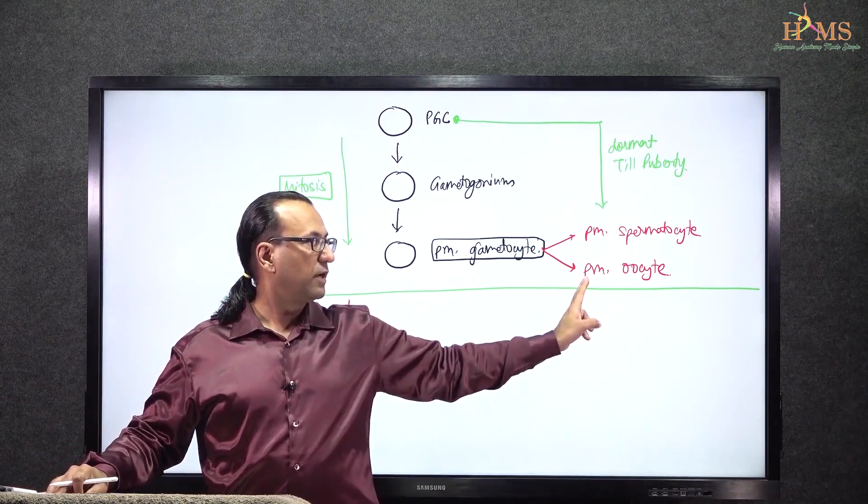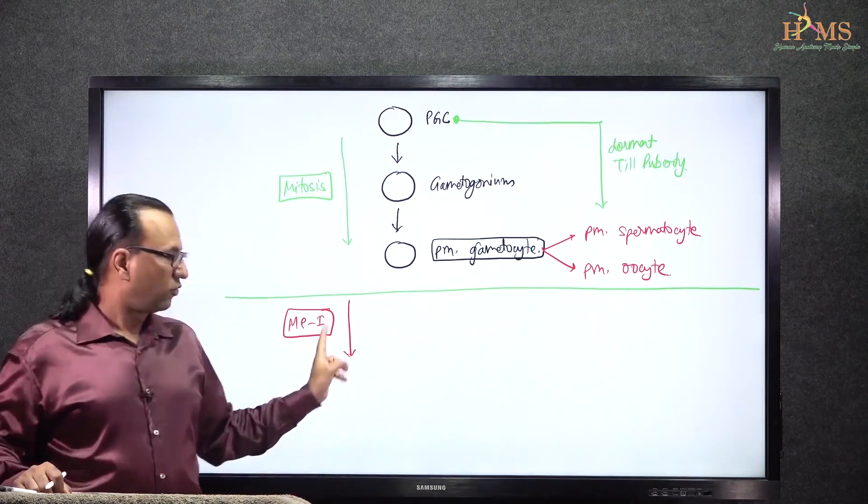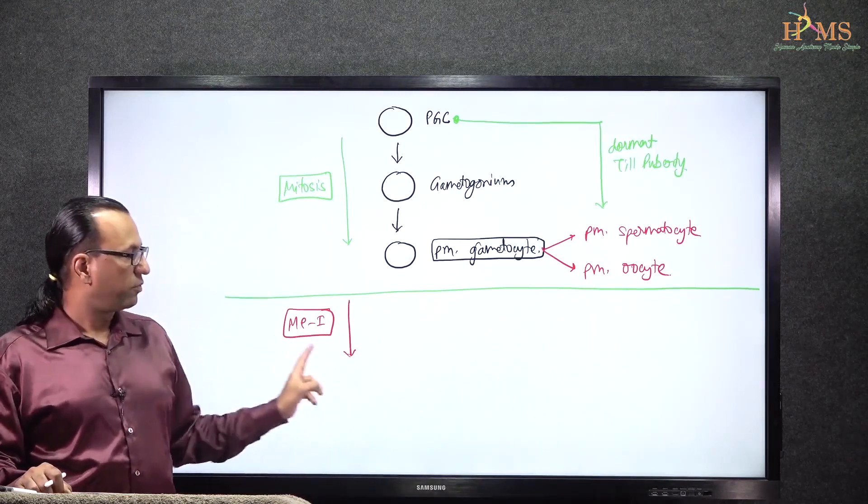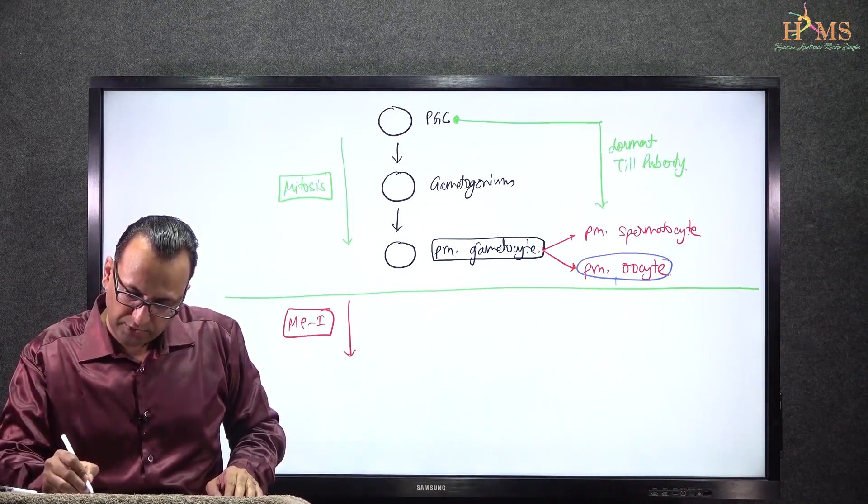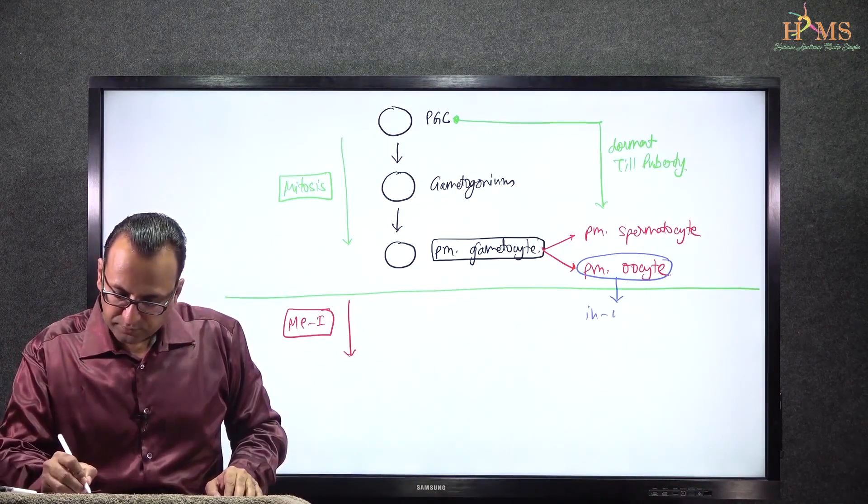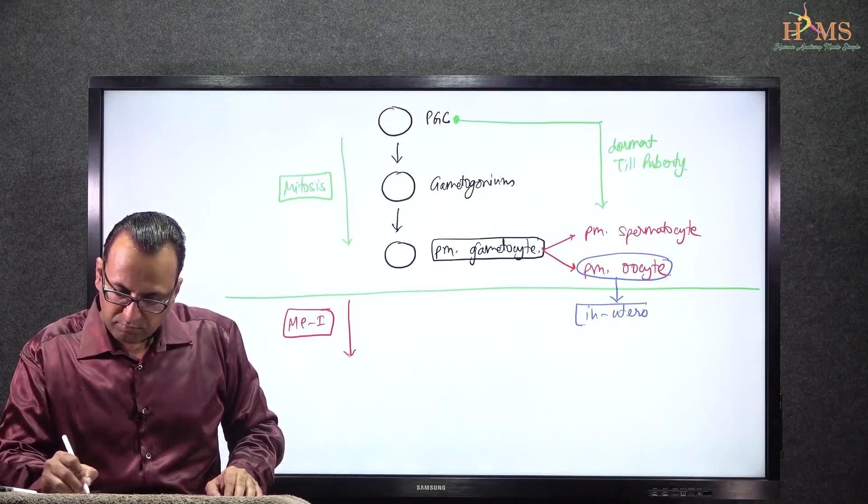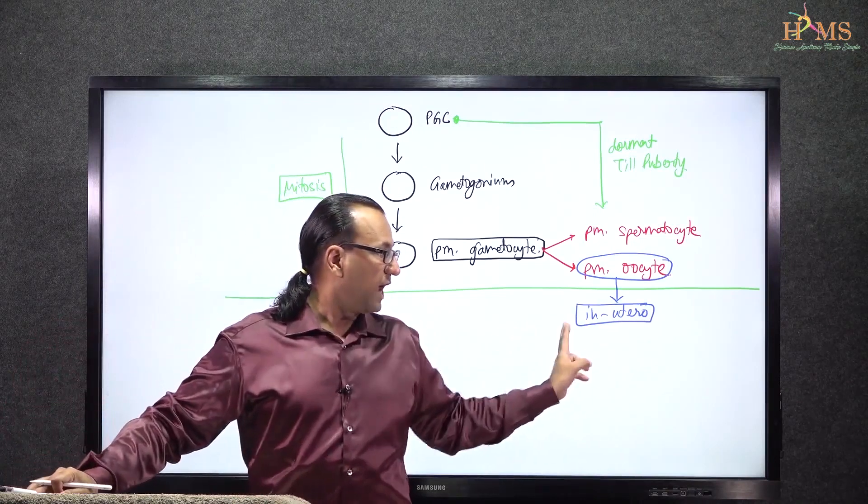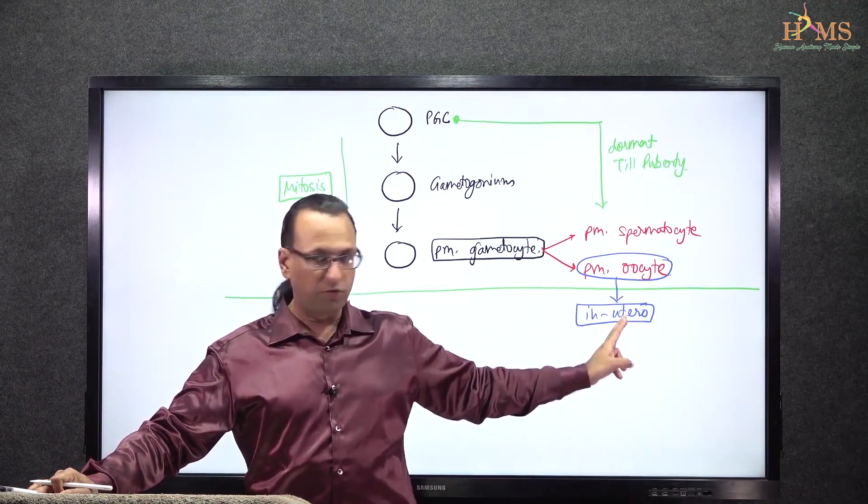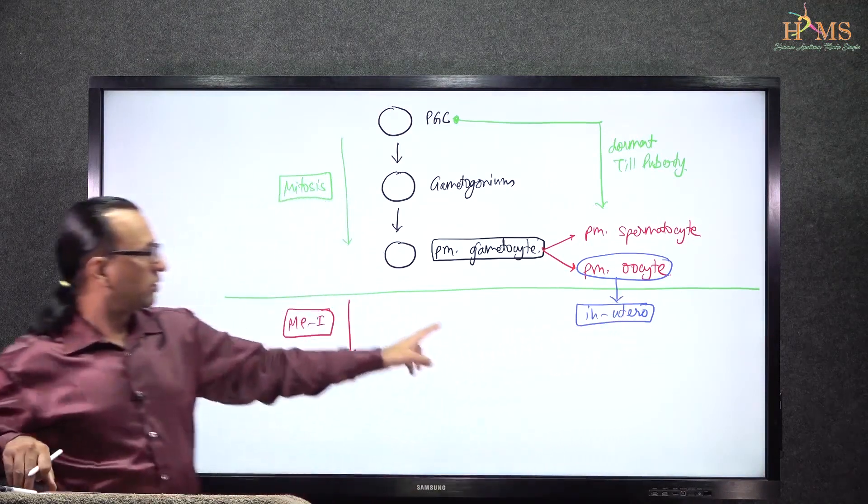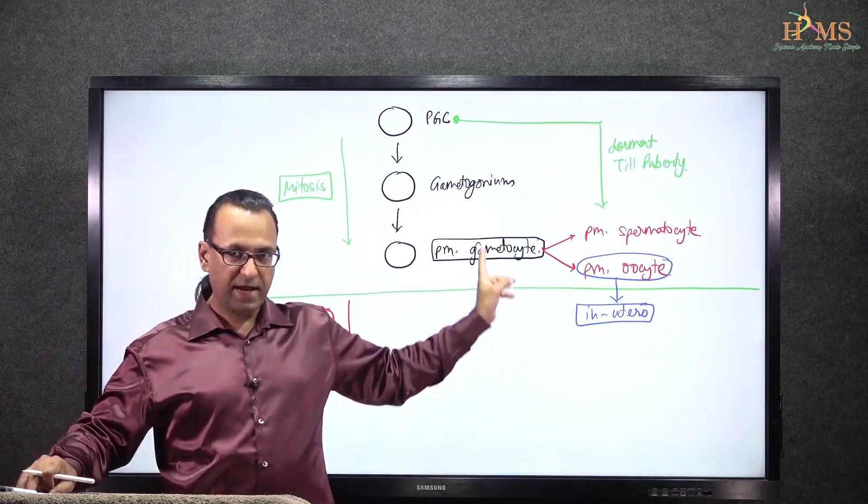It is different for a female. In a female, the meiosis would have started quite early, actually before birth, when the female baby was in utero itself. So primary oocyte would have entered meiosis one while the baby was still in mother in utero. When you look at a girl baby born at birth, you will find the ovaries having the primary oocyte already entered into meiosis one.